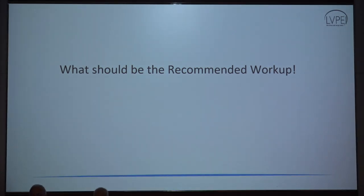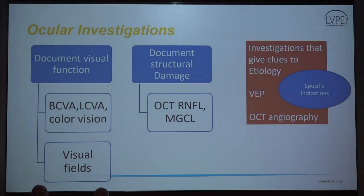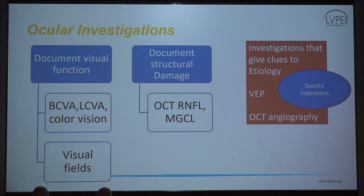So what should be our recommended workup today? We need to do ocular investigations to document visual functions and visual fields, which are very important. We need to document structural damage via OCT, RNFL, and MGCL. You may skip OCT at presentation and do it around 3 to 4 weeks when the changes will start manifesting. If there are diagnostic dilemmas, we can go to VEP and OCT angiography.